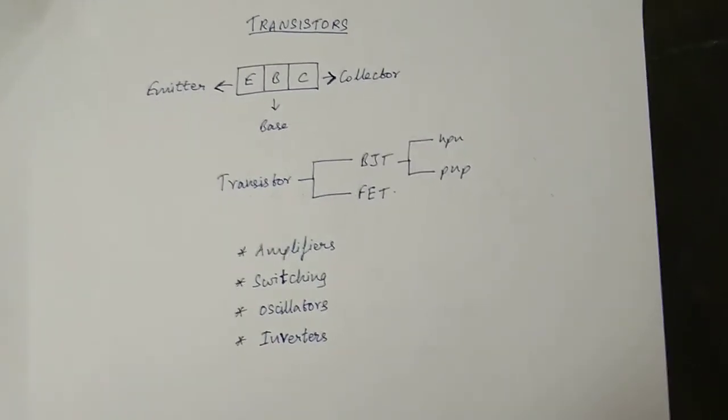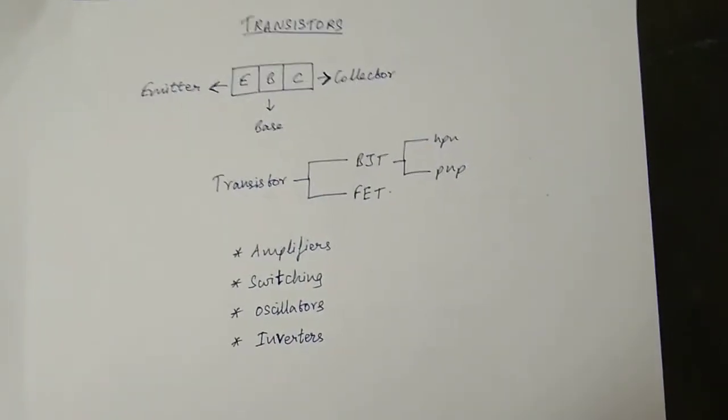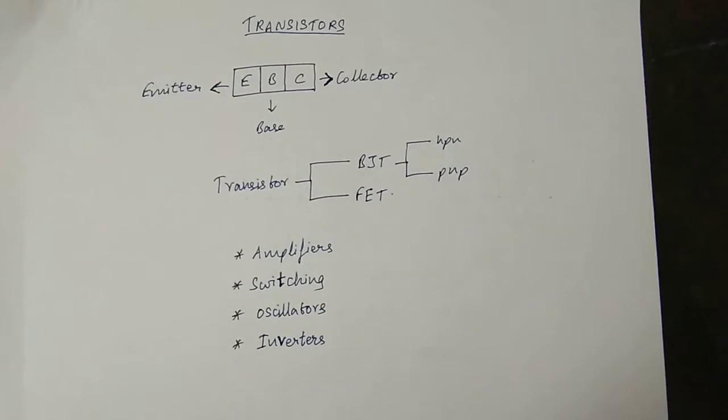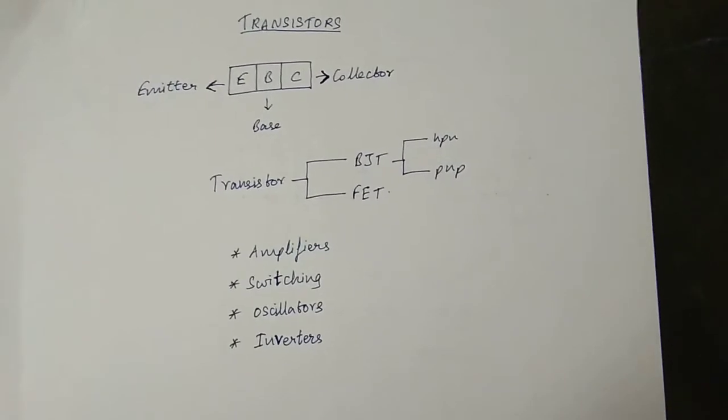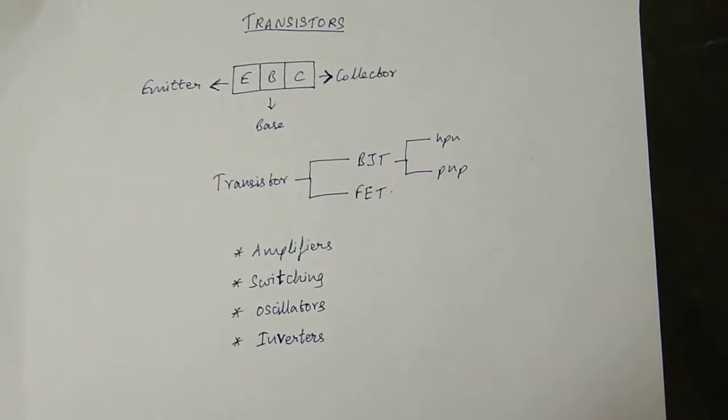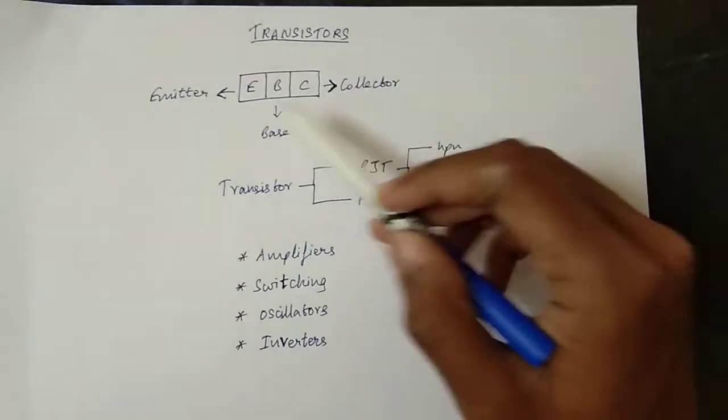Diodes are 2 terminal devices, with a P and N junction. Transistors have 3 terminals — emitter, base, and collector — but there are 2 junctions.